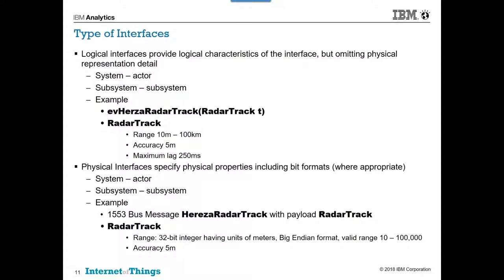Once you get down to building physical subsystems, you specify physical interfaces because in the physical world these things have to connect together. So we take that logical interface and clarify it. The event radar track, which is a SysML model event passing a parameter of type radar track, might become a 1553 bus message with a certain bit layout. Here we specify at the bit level what that layout looks like — command word, status word, data words. In this case, the radar track is shown as a 32-bit integer in big-endian format, with units of meters and a valid range of 10 to 100,000.